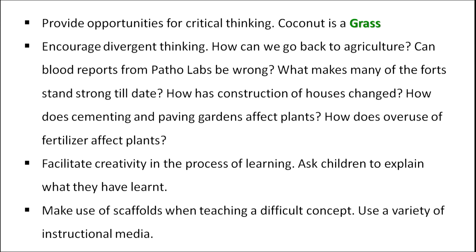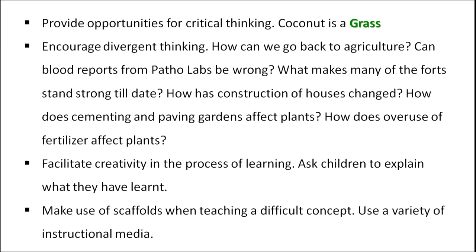Encourage divergent thinking: How can we go back to agriculture? Can blood reports from the patholabs be wrong? What makes many of the forts stand strong till date? How has the construction of houses changed? How does cementing and paving gardens affect plants? How does overuse of fertilizer affect plants? We can get our students involved in divergent thinking. Facilitate creativity — ask children to explain what they have learned, encourage creativity, make use of scaffolds, and use a variety of instructional media.